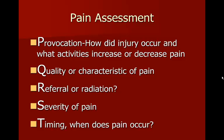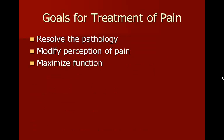You can also use PQRST as a way of remembering the questions to ask when writing your notes. P stands for provocation — how did the injury occur and what activities increase or decrease your pain? Q stands for quality or characteristic of the pain. R is referral or radiation. S is severity of the pain. T is timing — when does the pain occur? The goals for treatment of pain should be to resolve the underlying pathology, modify the perception of pain, and maximize the function of that person and that area.